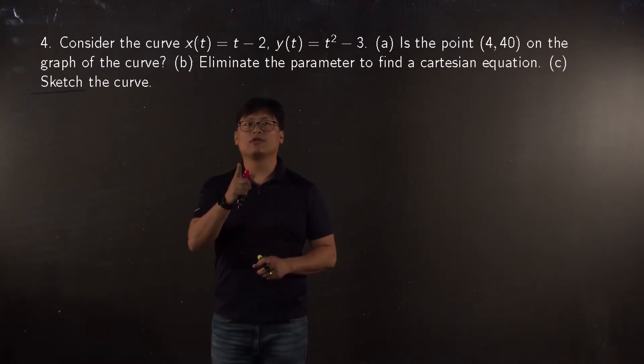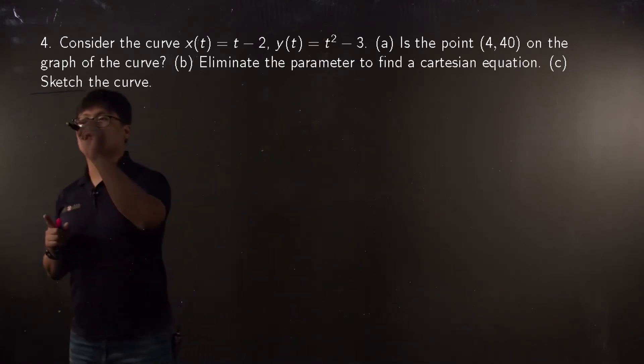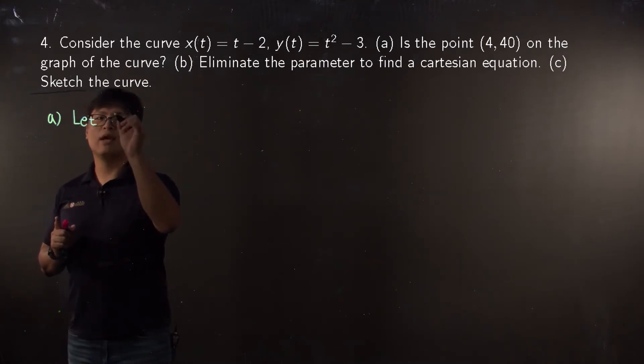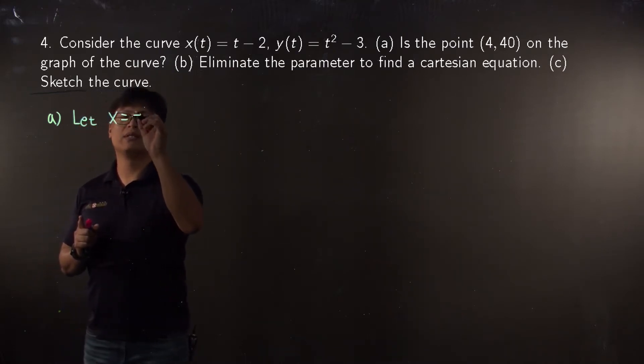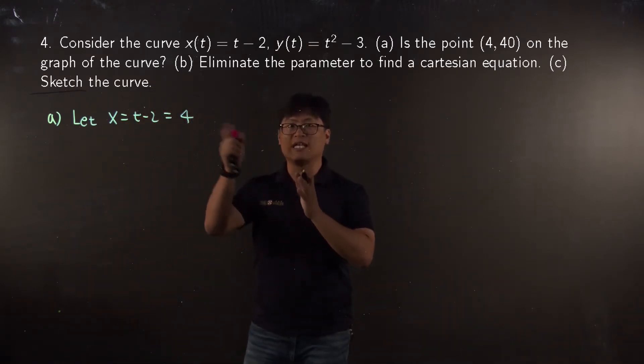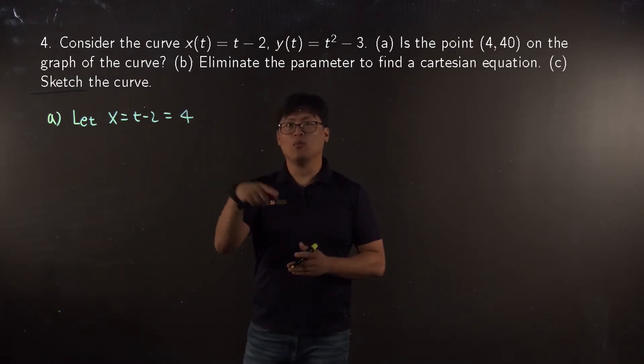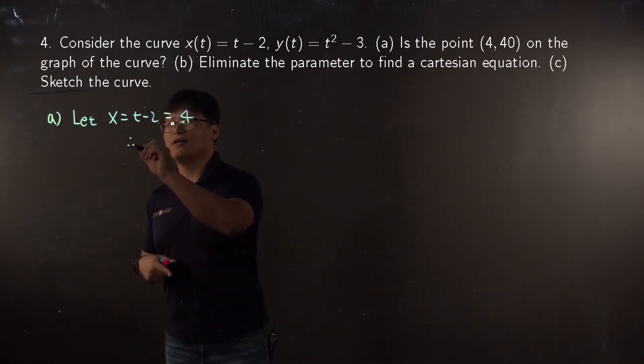We would like to check your point (4, 40) is on the graph. So let me say your x component, which is given by t - 2 equal to 4, to find the parameter. It's really easy calculus. When you add 2 on both sides you can easily find your parameter t is 6 for this point.